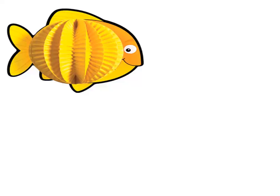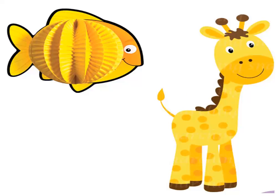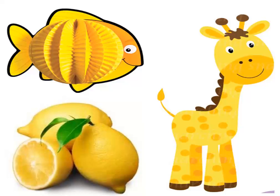Let's take another color. What's this color? Yellow! It's a yellow fish — very good, it's a yellow fish. And what's the color of this giraffe? It's a yellow giraffe. And this lemon — what's the color of this lemon? Yellow, excellent, it's a yellow lemon. Let's sing for the yellow color: Yellow, yellow, sleep on your pillow!